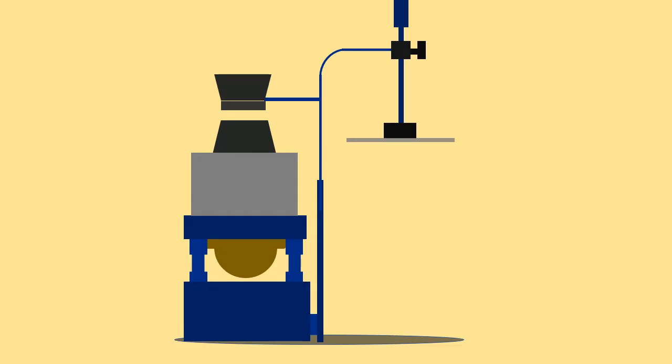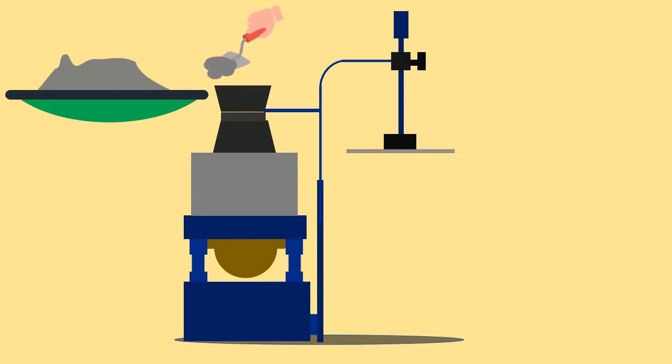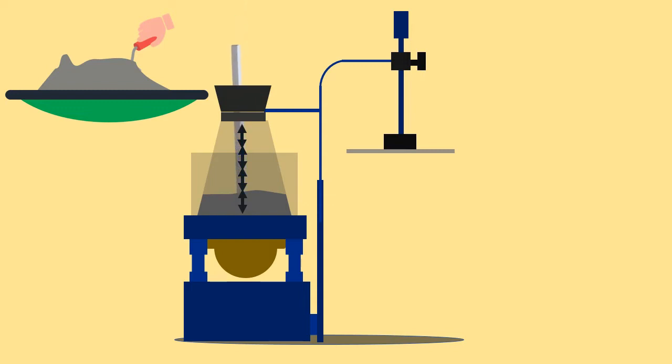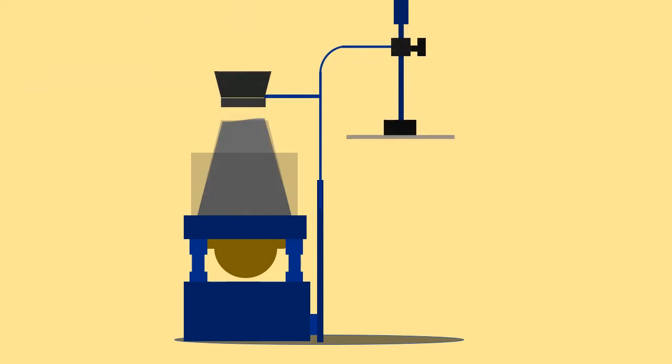Place the slump cone inside the cylinder. Now fill the concrete in four layers, each layer one fourth of cone height, and tamp the surface 25 times. Once filled, strike off the excess concrete.